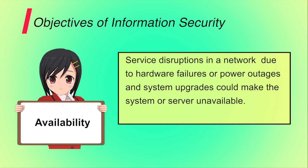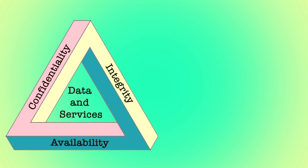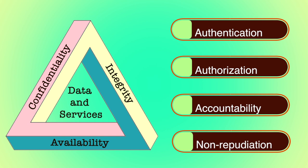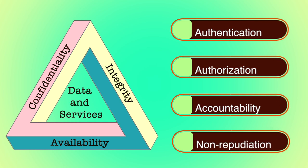It should be kept in mind that when providing security, data must always be available to the authorized user whenever required. Although the CIA triad is well established, some in the security field feel additional concepts are needed. Four most commonly mentioned are authentication, authorization, accountability and non-repudiation.